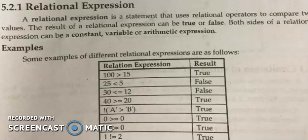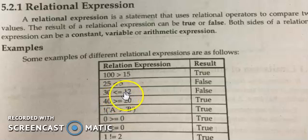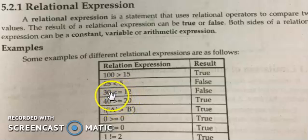Now we discuss the relational expression — an expression which contains some relational operators. For example: 100 greater than 15 — is it true or false? It is true. 25 less than 5 — false. 30 less than or equal to 12 — false. If the right side were 30, it would be true because the equal part also applies. 40 greater than or equal to 20 — true.